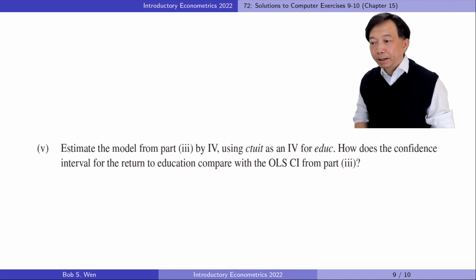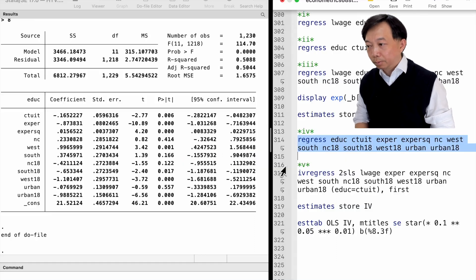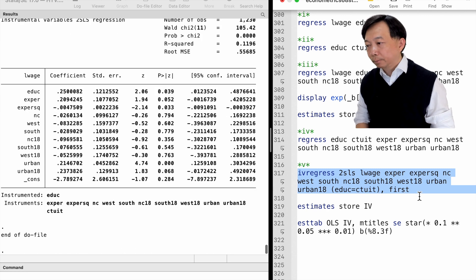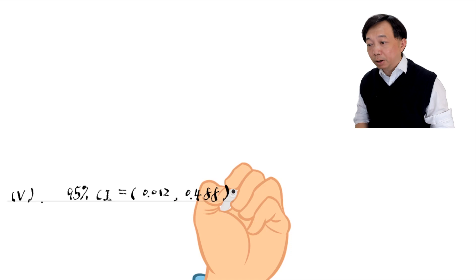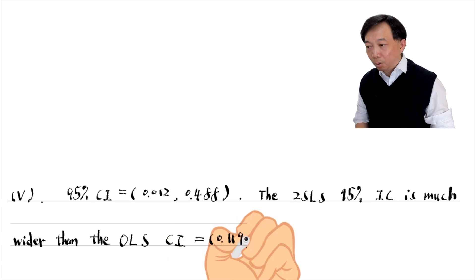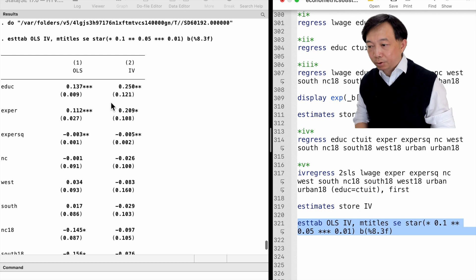In part 5, we estimate the model from part 3 by IV using the change in tuition as an IV for education. The 95% confidence interval is from 0.012 to 0.488, which is much wider than the OLS confidence interval from 0.119 to 0.155, due to a much larger standard error for the two-stage least squares estimate.